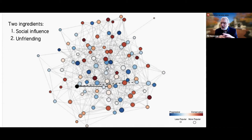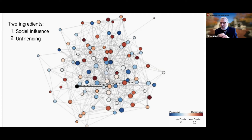The second ingredient is unfriending. Initially the connections are random, but when you see a friend post something you strongly disagree with, you can with some probability choose to unfriend them. In this model, when you do that, you replace that link with a completely random link — the dashed line is the link you cut, and the new random one you create is shown as the solid line.